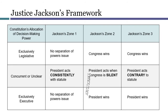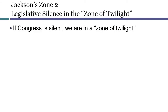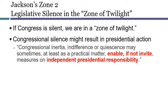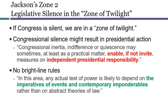What happens in Zone 2? Here the President is not acting contrary to a statute because there is no statute. Justice Jackson used the evocative phrase 'Zone of Twilight' to describe this area. He recognized that when Congress is silent, as a practical matter, there might be strong incentive for a President to take independent action, especially if the country is in unforeseen circumstances. The other opinions in Youngstown took different positions — some said the President could not act at all, others said the President should be presumed able to act. For Justice Jackson, there is no rule of thumb for a court to use in Zone 2. This is an area for case-by-case decision-making in light of the imperatives of events and contemporary imponderables, and abstract theories of law will be of little use.